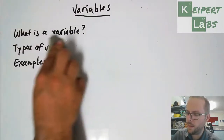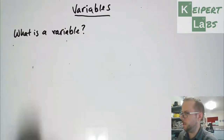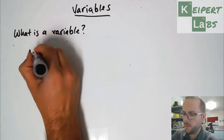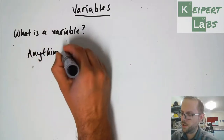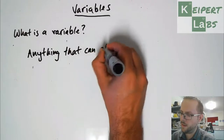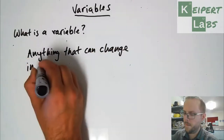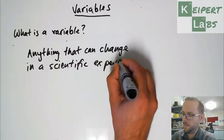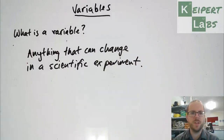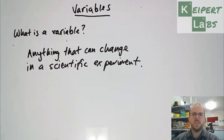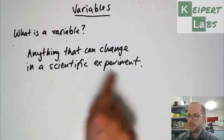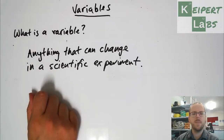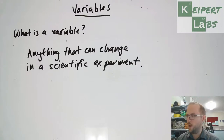We're going to start by thinking about what is a variable in an experiment. We would say that a variable is anything that can change in a scientific experiment. The word variable is also an adjective — something that is variable, like what's the weather like in Coffs Harbour? Well, it's variable — something that's able to be changed. But specifically we're thinking about any factor or any particular thing in a scientific experiment that is able to change.